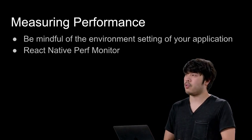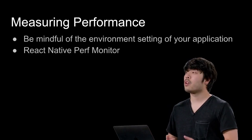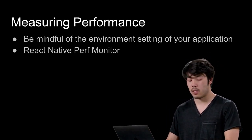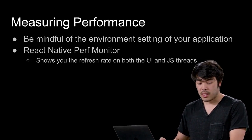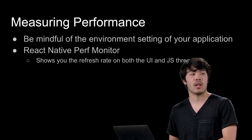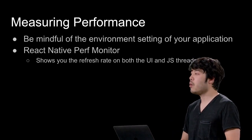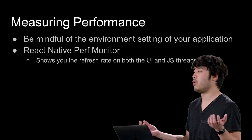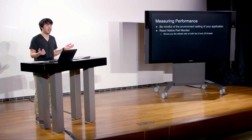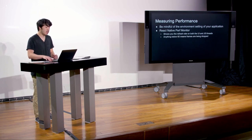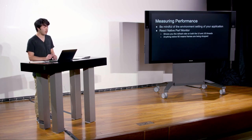There are a few tools built into React Native itself that allow us to benchmark performance. One is called the React Native Performance Monitor. It shows you the refresh rate of both your UI and your JavaScript thread — one thread for rendering the UI on the native side and one executing your JavaScript. Anything below 60 frames per second means we're dropping frames, so there's potentially a bottleneck.